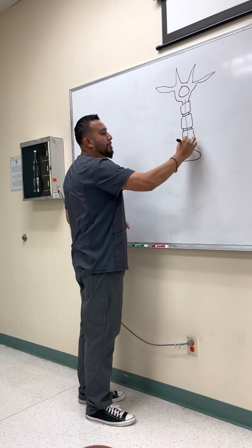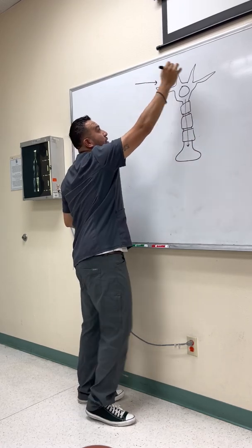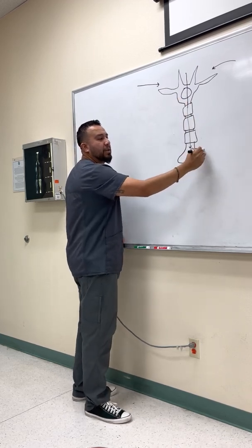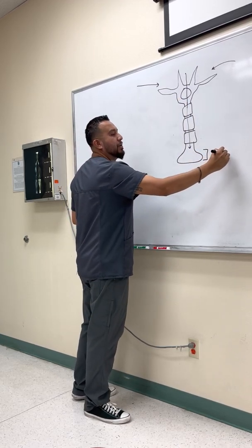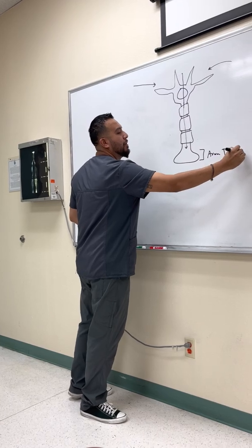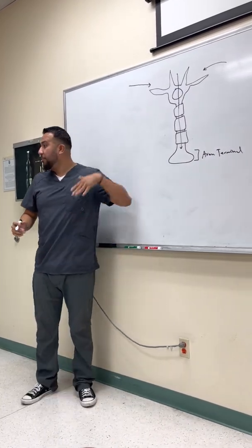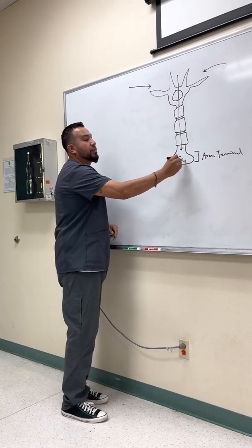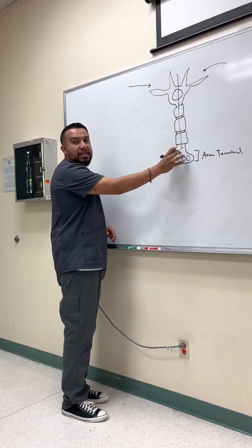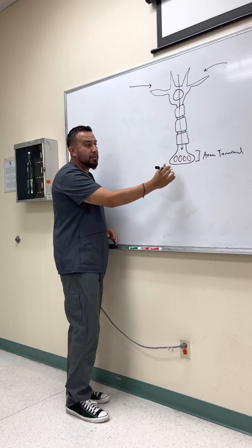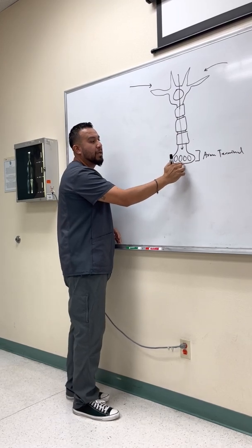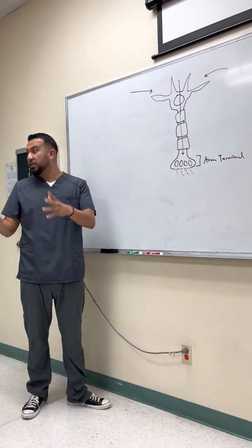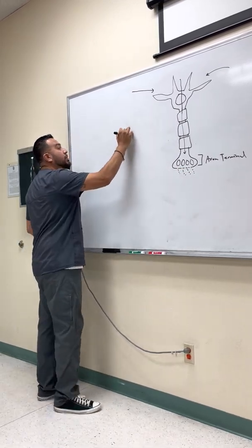The impulse travels in one direction — it receives signals from other neurons through the dendrites and moves toward the axon terminal, like a terminal at the airport where things are about to take off. There are little globules of fluid called vesicles, and when the electrical impulse stimulates them, they open up and release their neurotransmitter — in this case, something called acetylcholine.